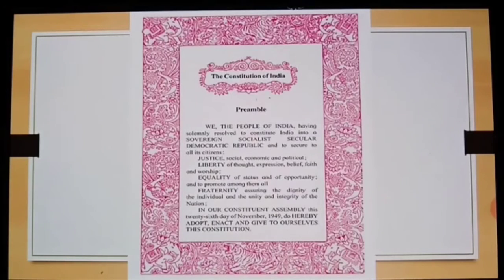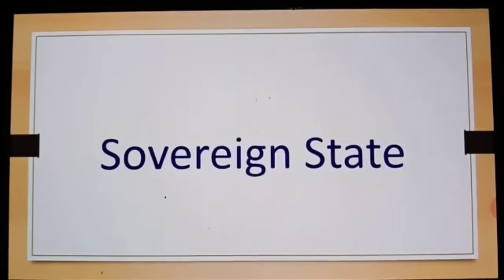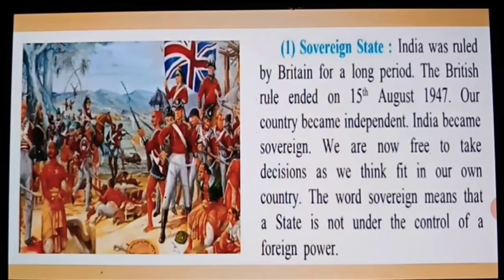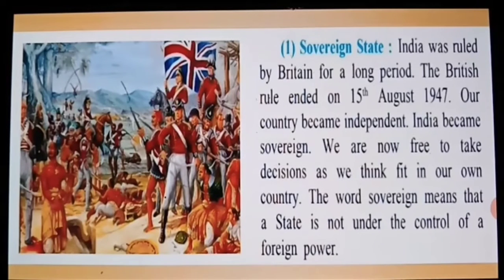We shall now understand the meaning of each of these terms. The first is: Sovereign State. India was ruled by the British for a long period. The British rule ended on 15th August 1947 and our country became independent — India became sovereign. We are now free to take decisions as we think fit in our own country. The word sovereign means that a state is not under the control of a foreign power. The most important goal of our freedom struggle was to acquire sovereignty.